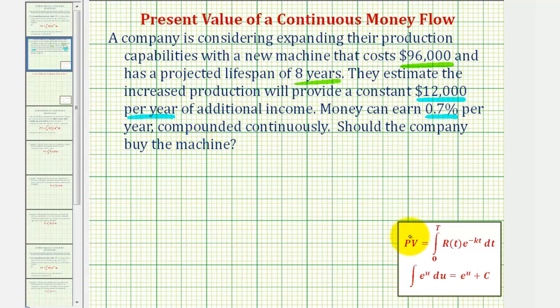To make this decision, we'll calculate the present value of this cash flow of $12,000 per year over an eight year period that can earn 0.7% continuous interest. And then we'll compare that present value to the cost of the new machine of $96,000.